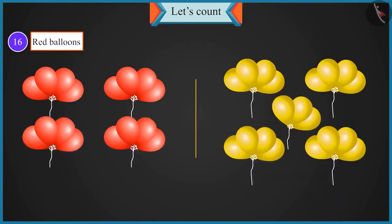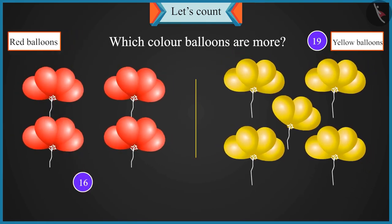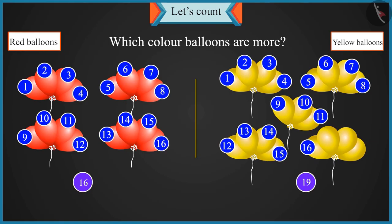Chotu, we have sixteen red balloons and nineteen yellow balloons. Tell me, which color balloons are more? There are sixteen red balloons and nineteen yellow balloons. Uncle, while counting, sixteen comes before and nineteen comes after. It means the count of yellow balloons is seventeen, eighteen and nineteen — three more. So yellow balloons are more.